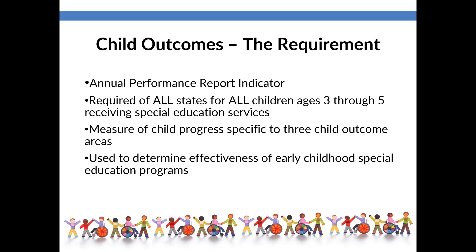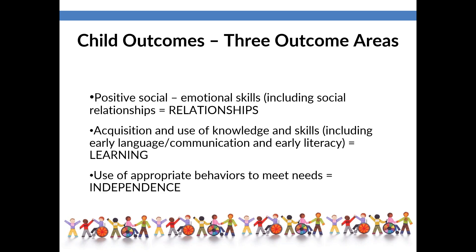The purpose of the APR and these indicators is really to improve educational results and functional outcomes of students with disabilities, while ensuring the requirements of the Individuals with Disabilities Education Act, or IDEA, are being met. Some indicators are compliance-related, some are performance or results, and child outcomes is one of those performance indicators. It's a measure of child progress during the time a child is receiving early childhood special education services, used to determine whether programs are making a positive difference. Because it's required for all states and all children ages three through five, it really isn't an opt-out.